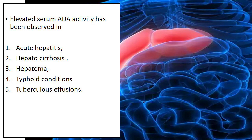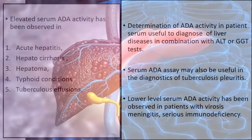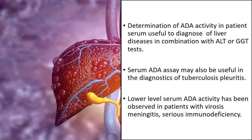Elevated serum ADA activity has been observed in conditions such as acute hepatitis, hepatocirrhosis, hepatoma, and typhoid, in addition to tuberculosis effusions. Determination of ADA activity in patient serum may add diagnostic value for liver diseases in combination with ALT or GGT tests. Serum ADA assay may also be useful in the diagnosis of tuberculosis pleuritis. Lower serum ADA activity has been observed in patients with virosis, meningitis, and serious immunodeficiency.